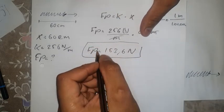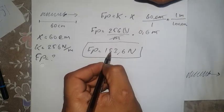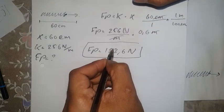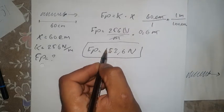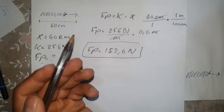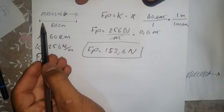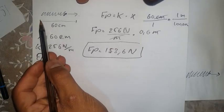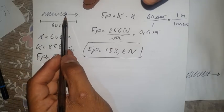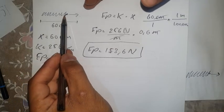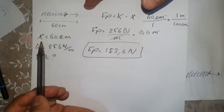So 153.6 newtons is the exact force that has to be exerted on the spring to pull it from its initial position to that final position.